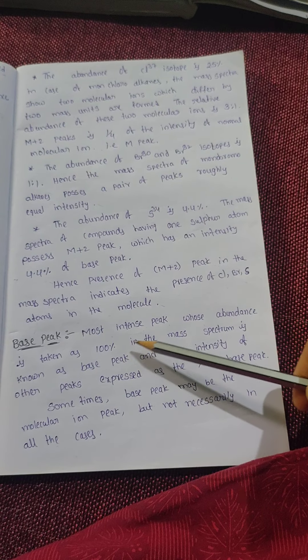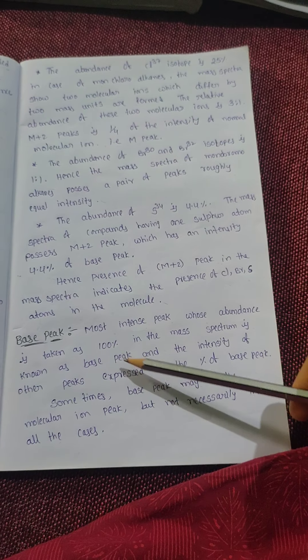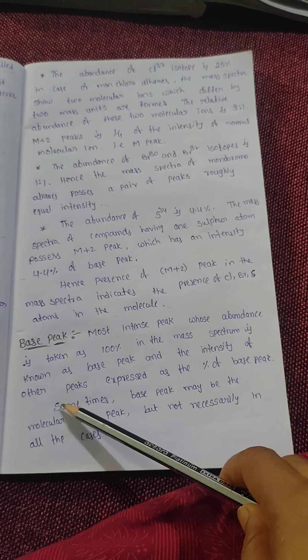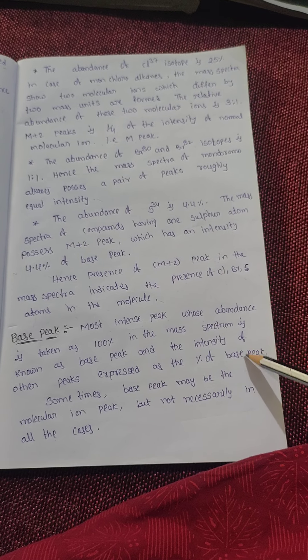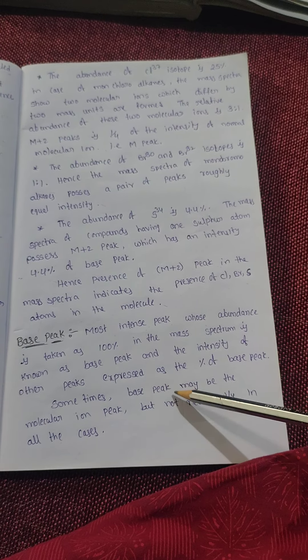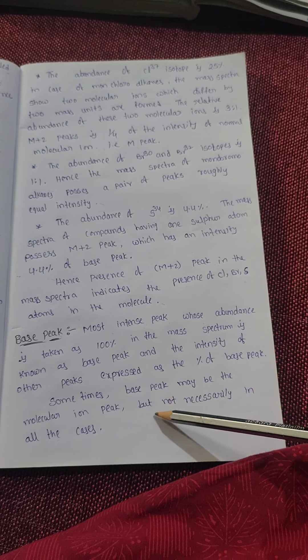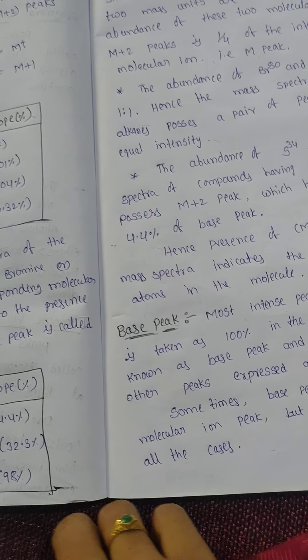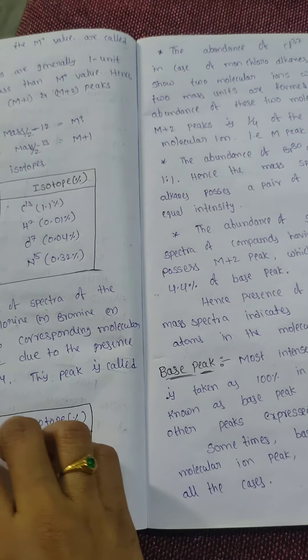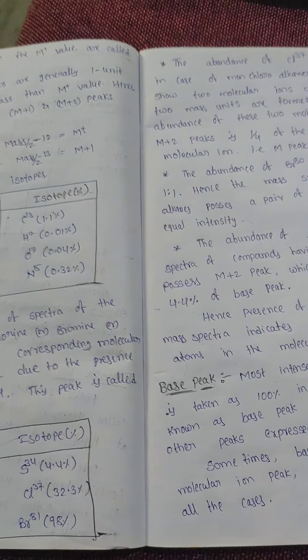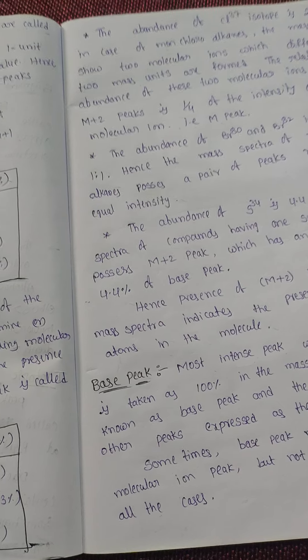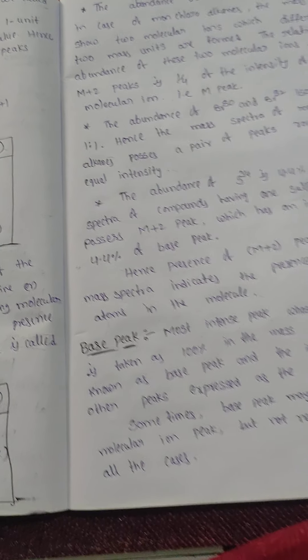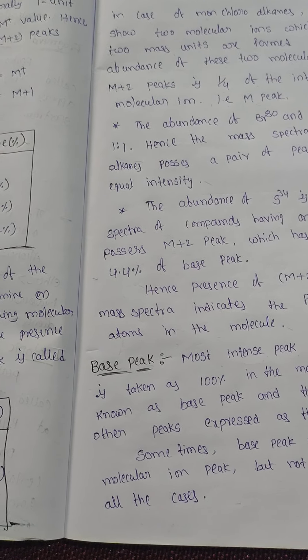Next is the base peak. The most intense peak, whose abundance is taken as 100 percent in the mass spectrum, is known as the base peak. The intensity of all other peaks is expressed as a percentage of the base peak. Sometimes the base peak may be the molecular ion peak, but not necessarily in all cases. Today we discussed types of ions and types of peaks: molecular ion peak, fragment ion peak, isotopic ion peak, and base peak.